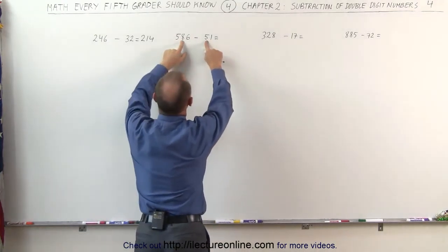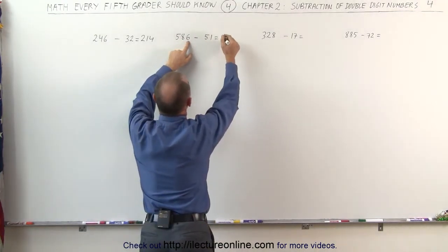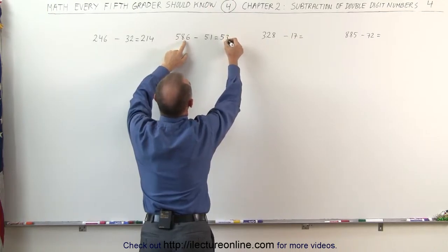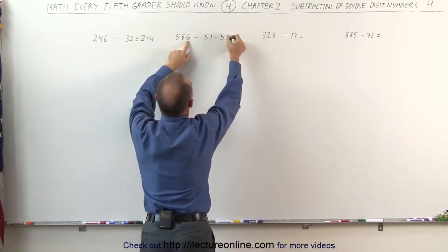Same over here. 5 is smaller than 8, 1 is smaller than 6. This becomes 5. 8 minus 5 is 3, 6 minus 1 is 5.